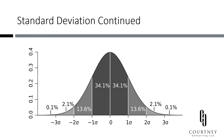This graph is the easiest way to understand what's going on with standard deviation. Generally, student performance is going to show up on a normal bell curve distribution, like the one on the screen. The standard deviation works like this: the middle line, marked here as zero, is the mean or average. Each vertical line on the graph represents a standard deviation. Typically, 34.1% of students will score on either side of the mean, with 13.6% being one standard deviation away, 2.1% of students being two standard deviations away, and so on.